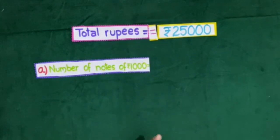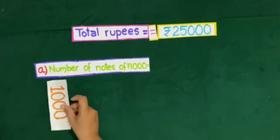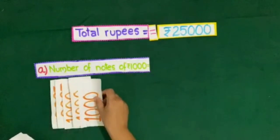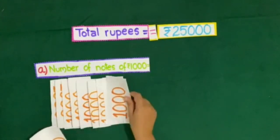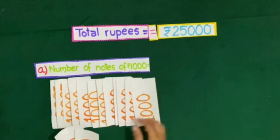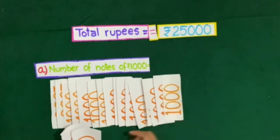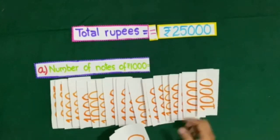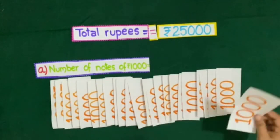So now count with me notes of rupees 1000. First of all we will count up to 25,000: 1000, 2000, 3000, 4000, 5000, 6000, 7000, 8000, 9000, 10,000, 11,000, 12,000, 13,000, 14,000, 15,000, 16,000, 17,000, 18,000, 19,000, 20,000, 21,000, 22,000, 23,000, 24,000, and 25,000.